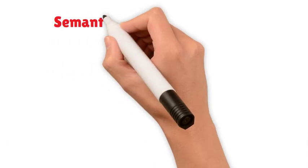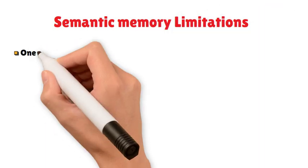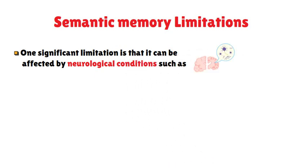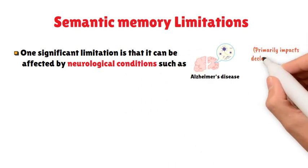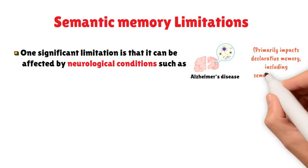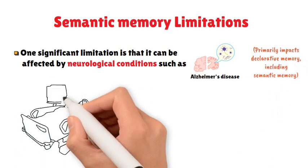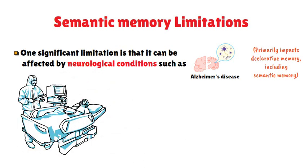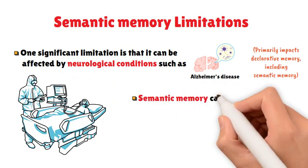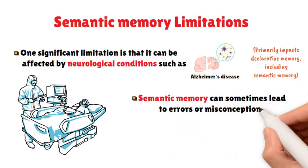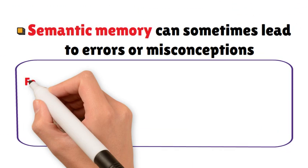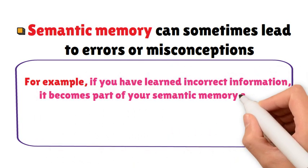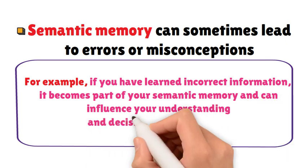However, semantic memory also has its limitations. One significant limitation is that it can be affected by neurological conditions such as Alzheimer's disease, which primarily impacts declarative memory, including semantic memory. Individuals with such conditions may struggle to recall basic facts and concepts that were once familiar. Additionally, semantic memory can sometimes lead to errors or misconceptions. For example, if you have learned incorrect information, it becomes part of your semantic memory and can influence your understanding and decisions until corrected.